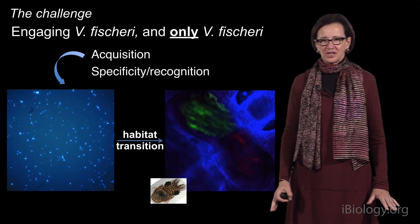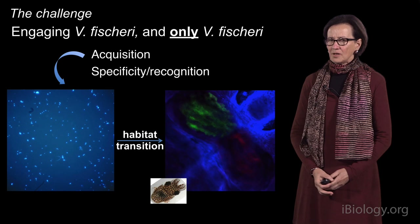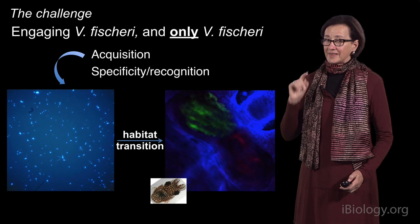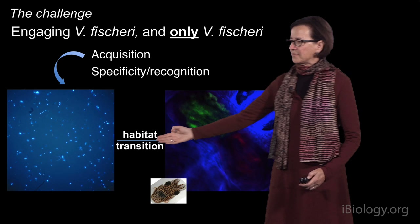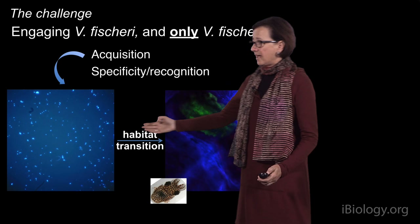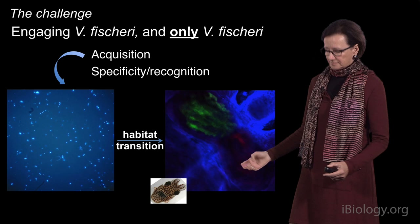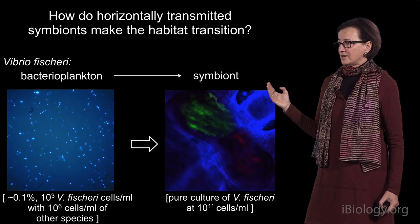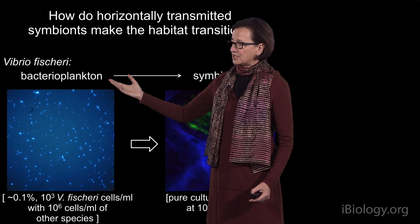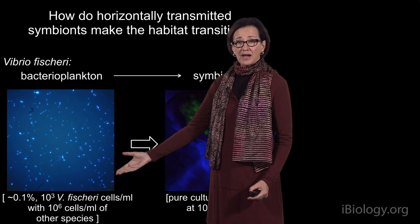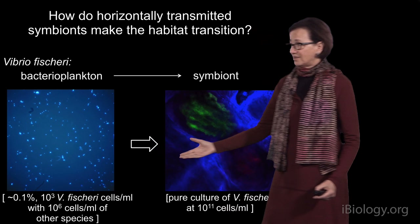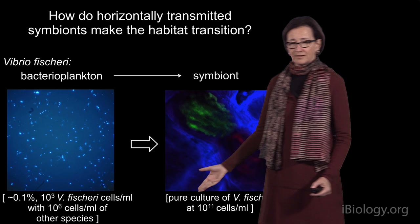There's quite a challenge to getting the symbiosis started: the animal must engage Vibrio fischeri and only Vibrio fischeri — in the absence of Vibrio fischeri, nothing else gets into the light organ. The bacteria go through a habitat transition from free-living in seawater to living in very dense pure culture. In the bacterial plankton, Vibrio fischeri is only about 0.1% — roughly 1,000 cells against a background of a million other bacterial cells per ml — and they move into pure culture at 10^11 cells per ml in the light organ. That's a huge uphill climb.